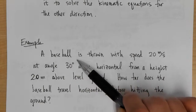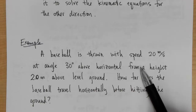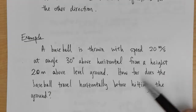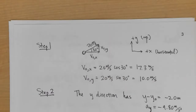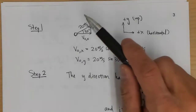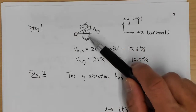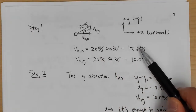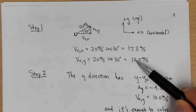Example: A baseball is thrown with speed 20 m/s at an angle 30° above horizontal from a height of 2 meters above level ground. How far does the baseball travel horizontally before hitting the ground? The first step is to get the components: v₀x = 20·cos(30°) = 17.3 m/s, and v₀y = 20·sin(30°) = 10.0 m/s.